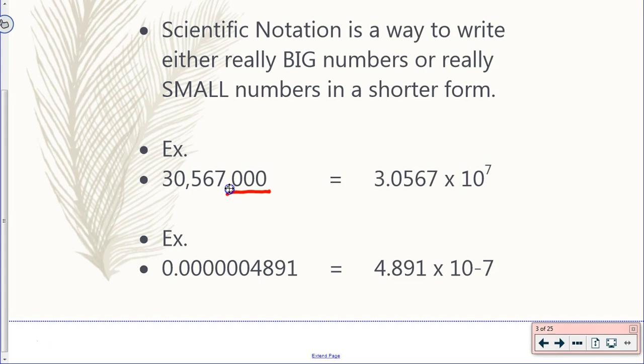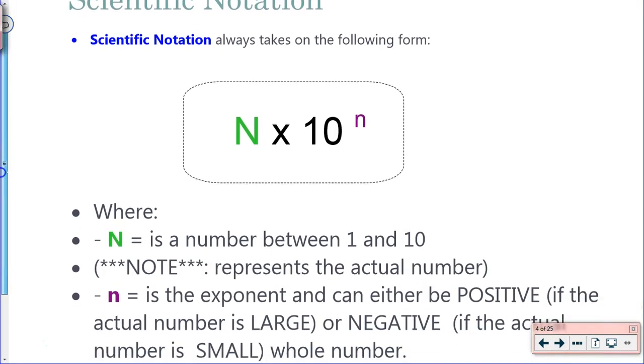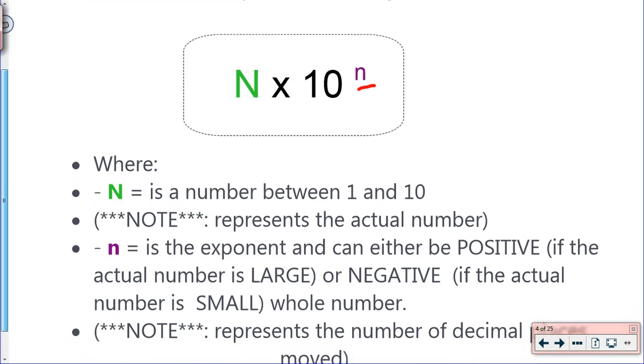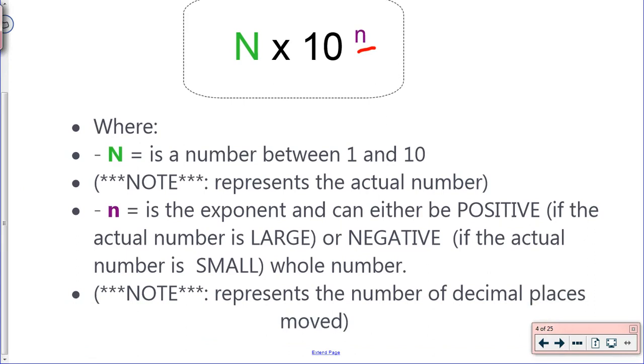When we're doing Scientific Notation, it always follows the exact same format. Scientific Notation always takes this form. The capital N here is a number between 1 and 9, representing the actual number itself. The little n in the uppercase corner is the exponent. It can either be positive or negative depending on how you move the decimal place. Your calculator is equipped to use these calculations. It normally has a times 10 to the button. It's important to note that when we have Scientific Notation, it still represents that same number. You're not changing it, you're just representing it differently.